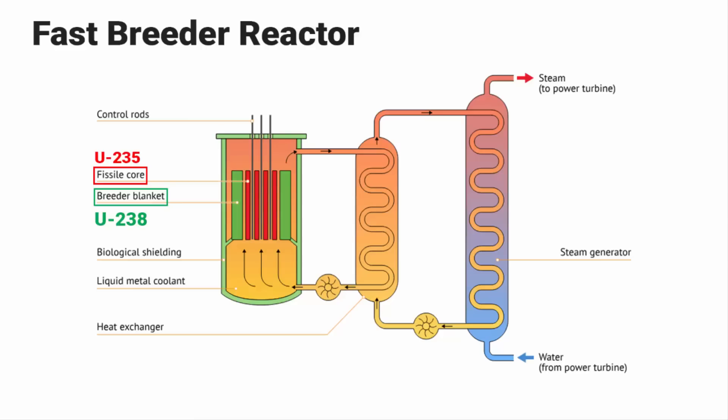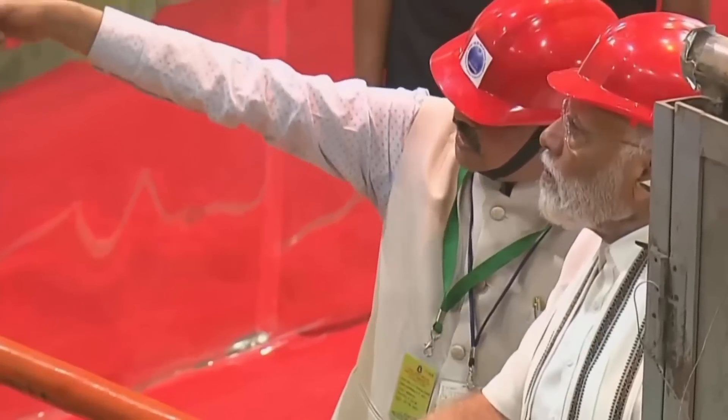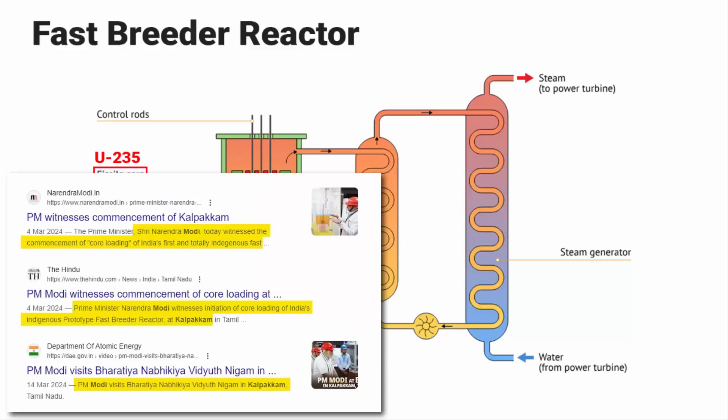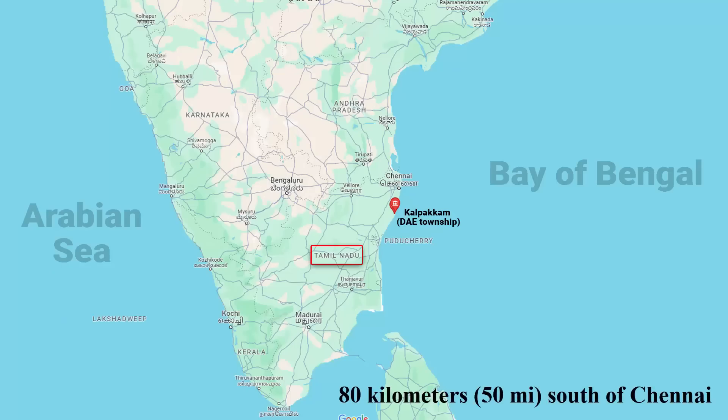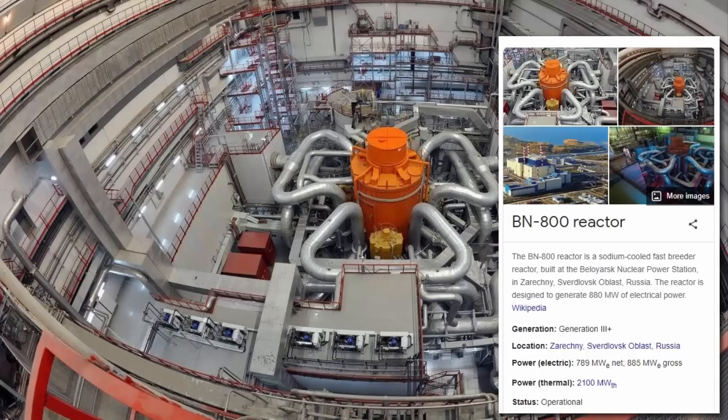Let me also tell you that fast breeder reactors are still under development and come with their own set of challenges, such as requiring more complex technology and potentially posing higher safety risks. However, it has taken India two decades to make the first step towards generating commercial electricity using a fast breeder reactor that produces more nuclear fuel than what it consumes. Fast breeder reactors are a three-stage nuclear program. India has entered into the vital second stage. Once it becomes operational, India will be the second country to have a fully functional fast breeder reactor after Russia.